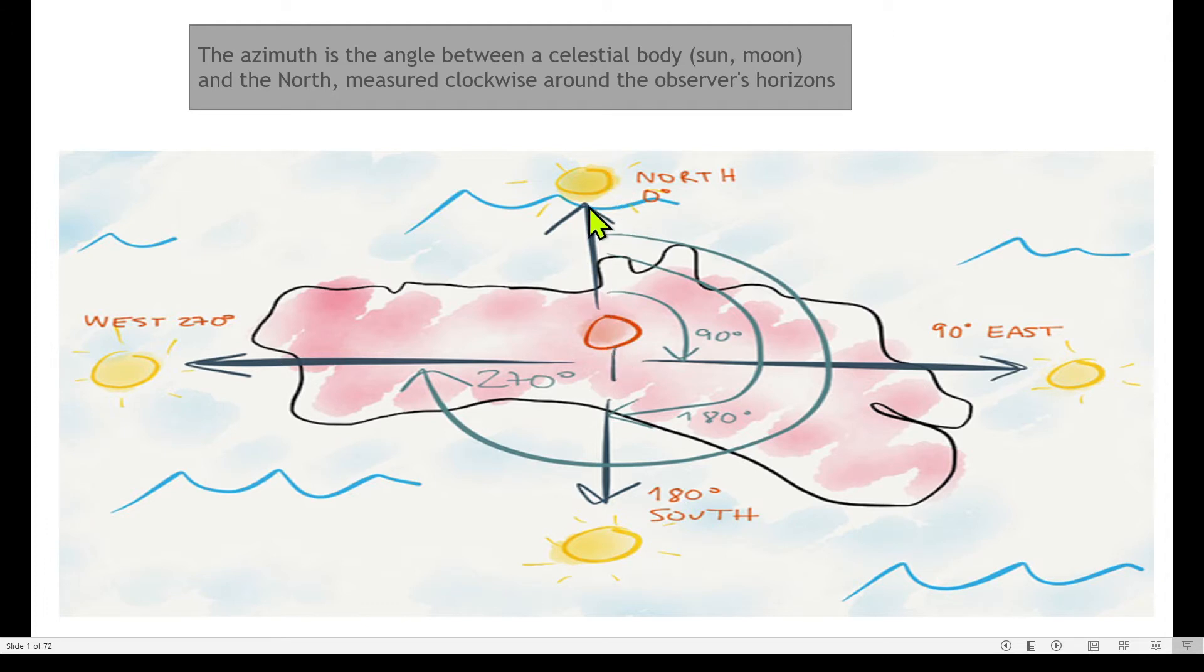The Sun is here and it's measured clockwise to the north side. The angle between the celestial body, Sun or moon, and the north. If Sun is here and our home is here or we are standing here, then the azimuth is 90 degrees East. If the Sun is here and our home is located here, it's 180 degrees South. So this angle is very important in order to know where our Sun is.